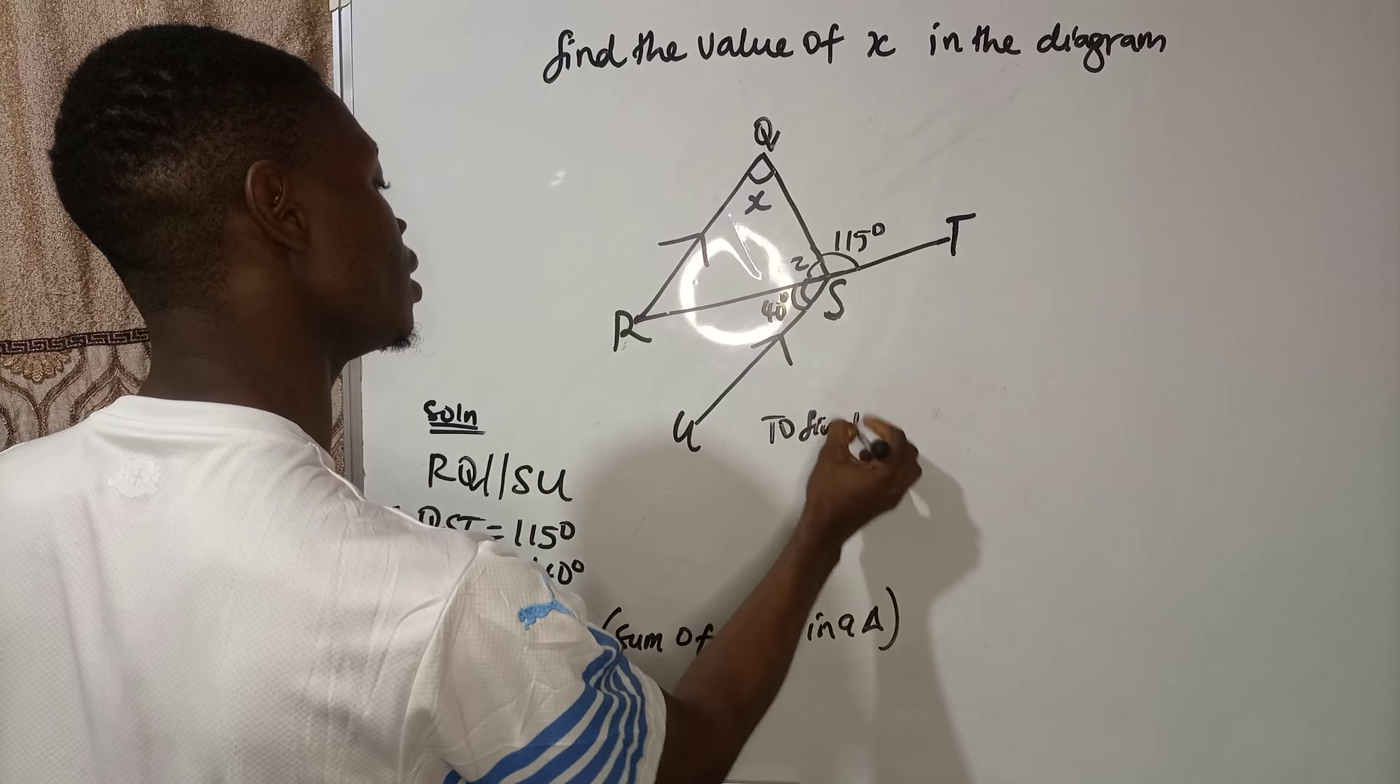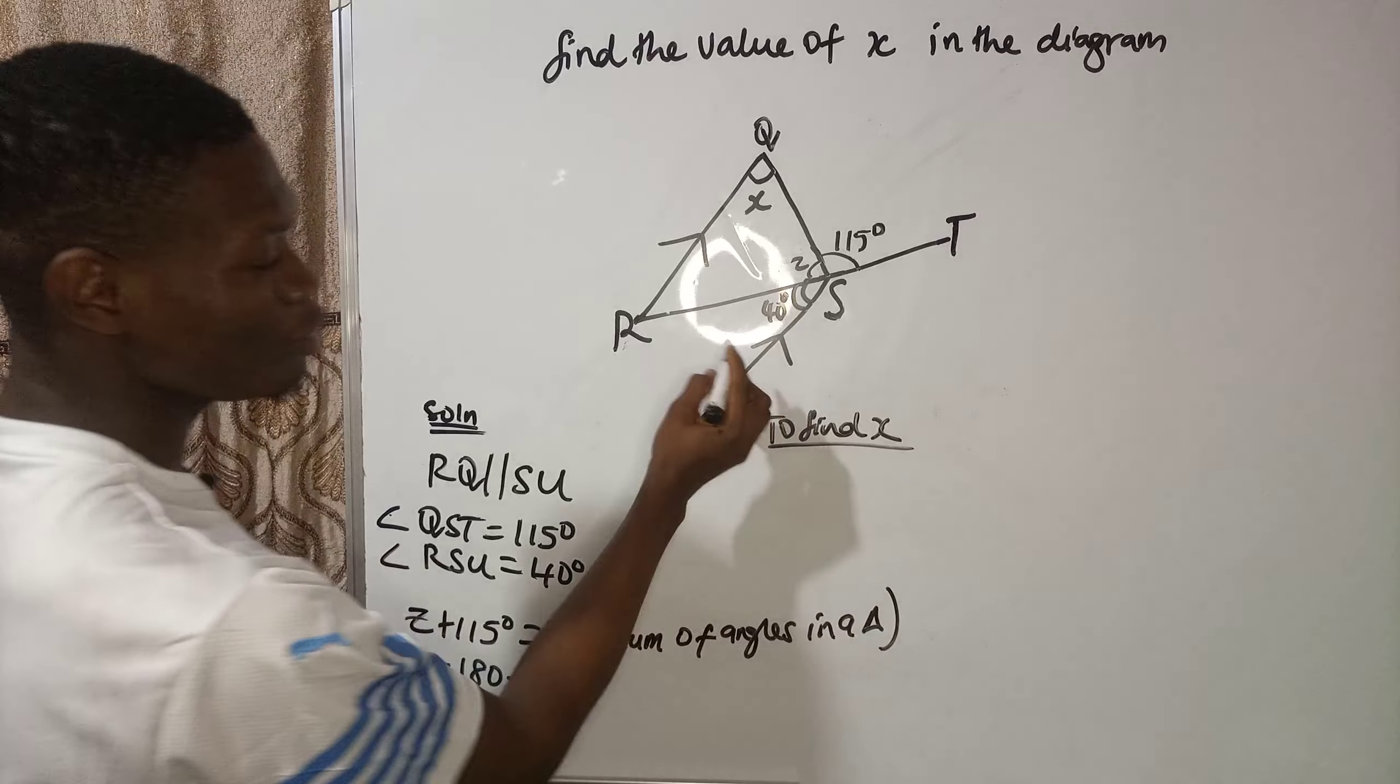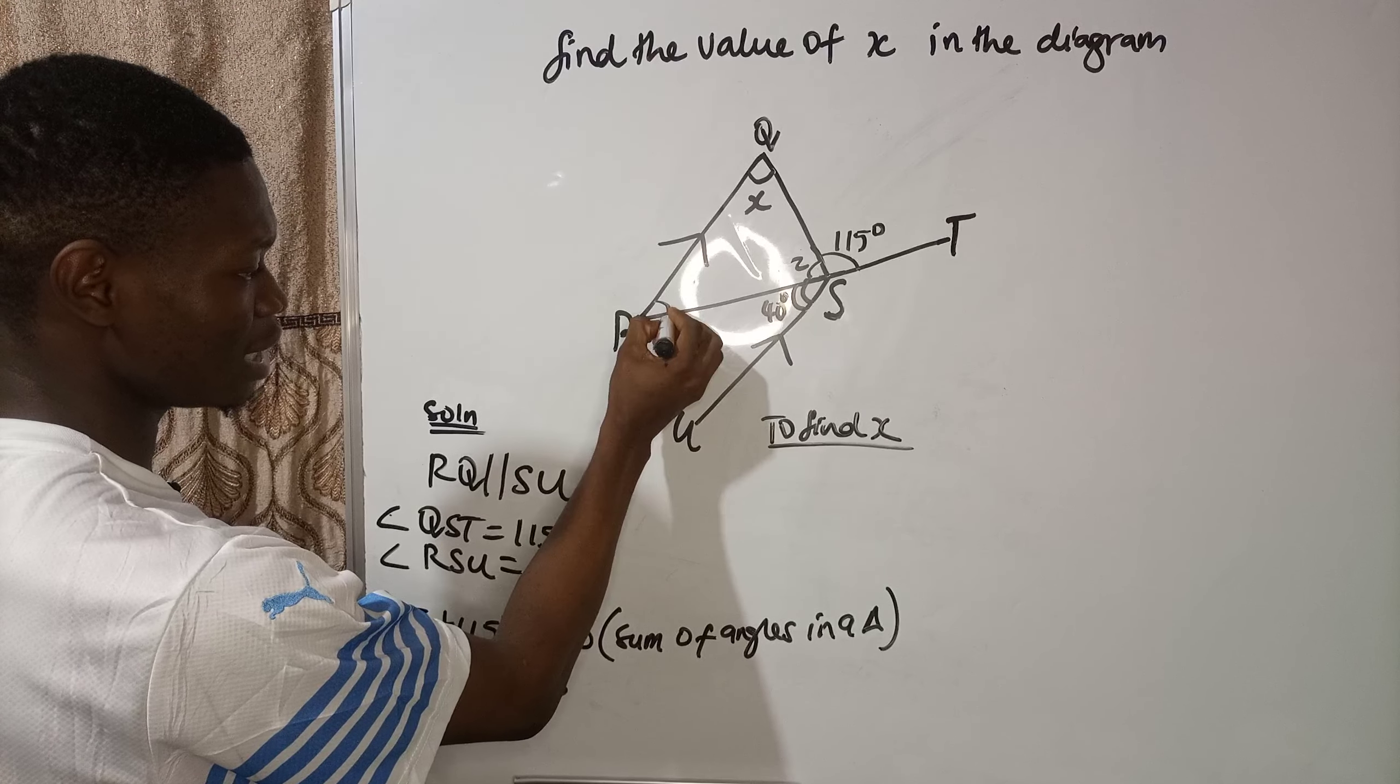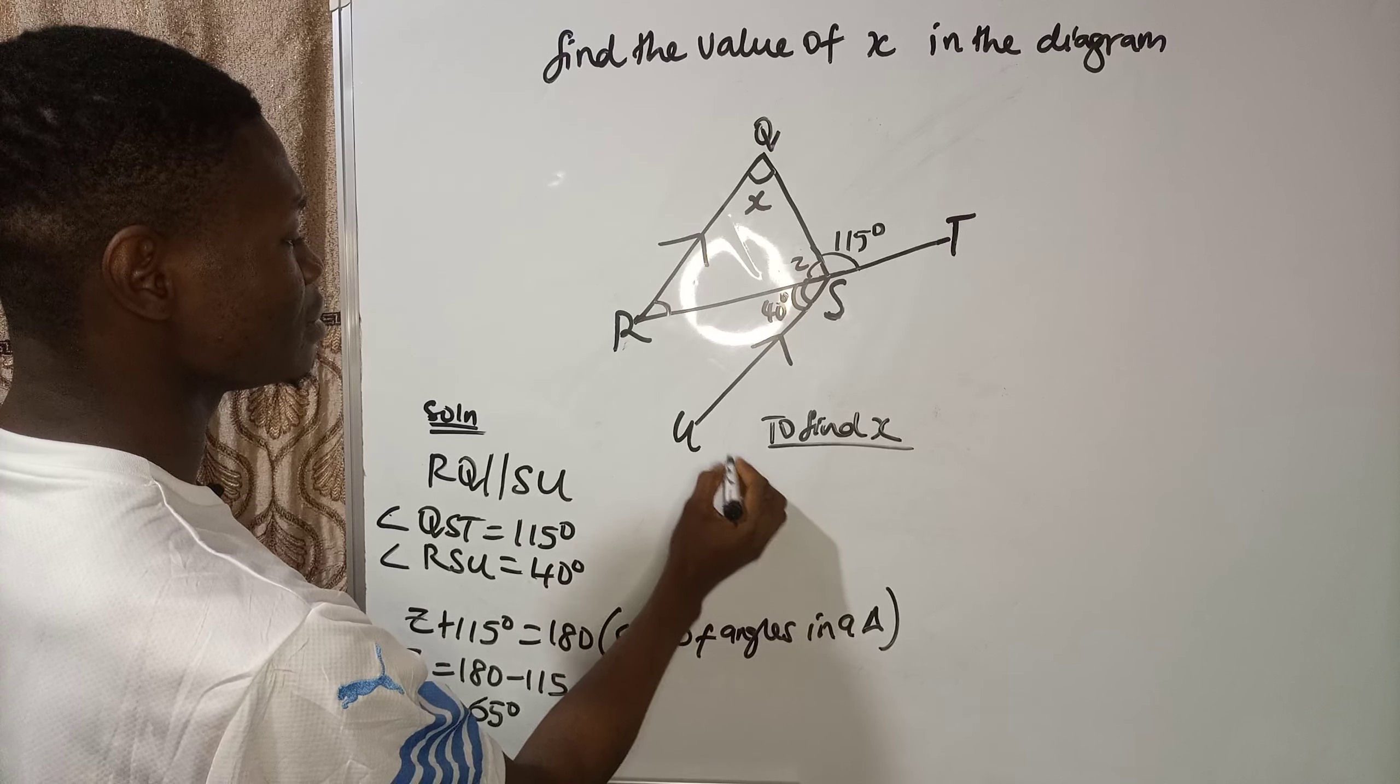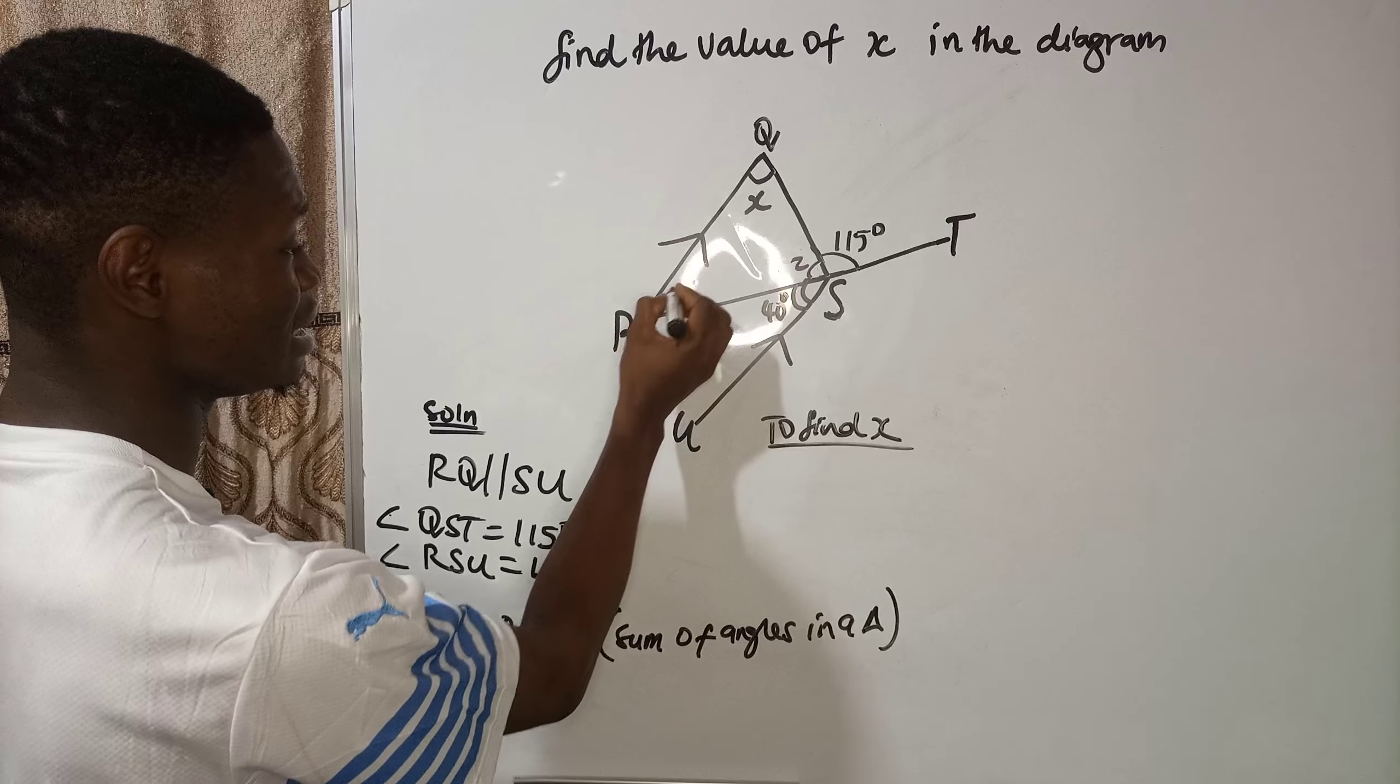Now to find X. I can quickly say that this angle R is automatically 40 degrees. Why? Alternate angle.